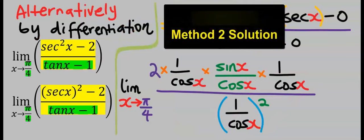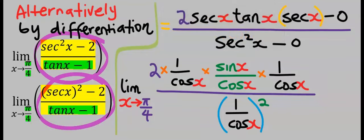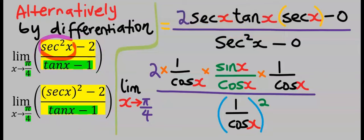Alternatively, by differentiation, this and this function both are the same. Sec squared x is the same thing as sec x all squared.